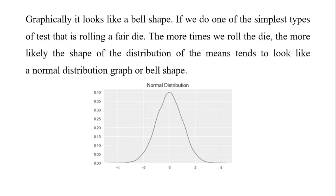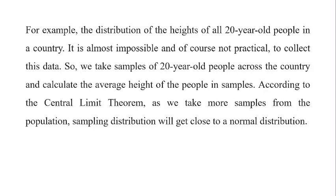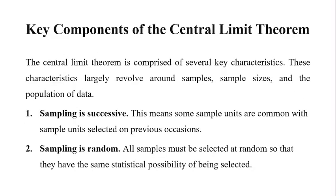As you can see here, the more times we roll the die, the closer it gets to normal distribution. For example, the distribution of heights of all 20-year-old people in a country — it is almost impossible and not practical to collect this data. So we take samples of 20-year-olds across the country and calculate the average height. According to the Central Limit Theorem, as we take more samples from the population, the sample distribution will get close to the normal distribution.